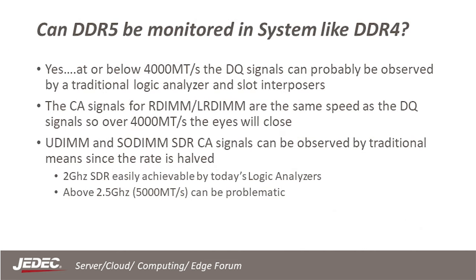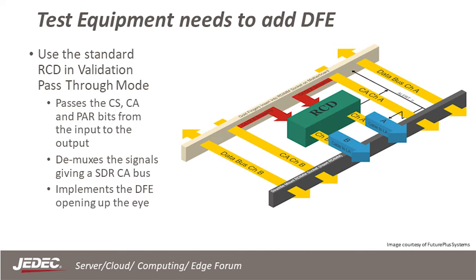So can we use the traditional passive slot interposers for DDR5? At below 4,000 MT/s, yes, and this will be for both the DQ and CA bits. For the RDIMM and LRDIMM, both the CA and DQ bits are DDR. For UDIMM and SODIMM, slot interposers can be used with traditional logic analyzers where the DQ bus is at 4,000 MT/s and the CA is at 2,000 MT/s — or just CA-only up to 4 GHz on the CA bus. When the DDR clock is faster than 2.5 GHz, the interposers provide a clock divider to handle the clock limitation of the logic analyzer. Above 4,000 MT/s, we have had to add active logic to the traditional slot interposers.